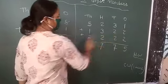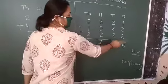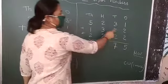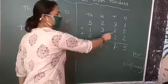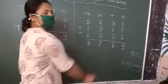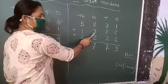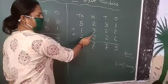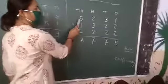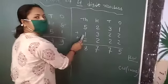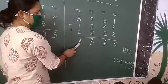One plus two plus two, five. Three plus two, five. Five plus two, seven. Two plus three, five. Five plus two, seven. Five plus one, six. Six plus two, eight.